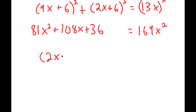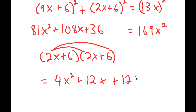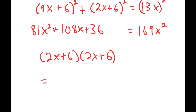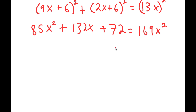Then we have (2x+6)², which expands to (2x+6)(2x+6). Distributing the 2x, I get 4x² plus 12x plus 12x plus 36, which equals 4x² plus 24x plus 36. Adding the two expanded expressions together, I get 85x² plus 132x plus 72 equals 169x².